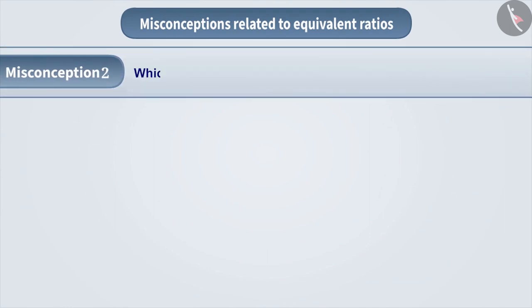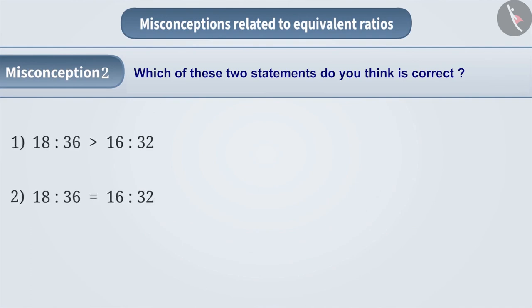Misconception 2. Which of these two statements do you think is correct? 18 is to 36 is greater than 16 is to 32 or 18 is to 36 is equal to 16 is to 32?